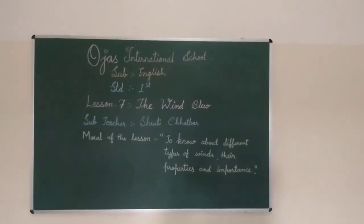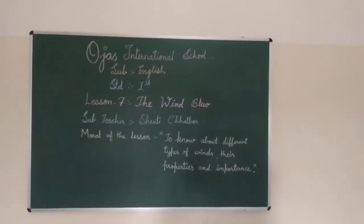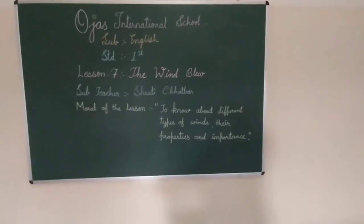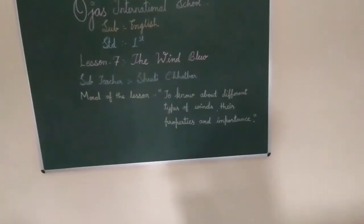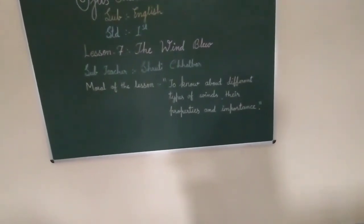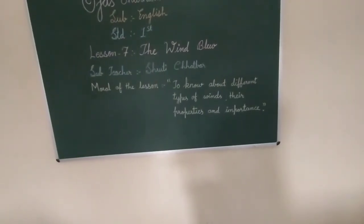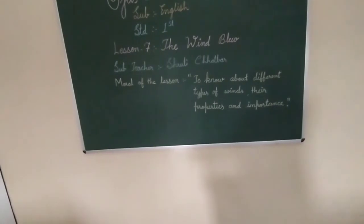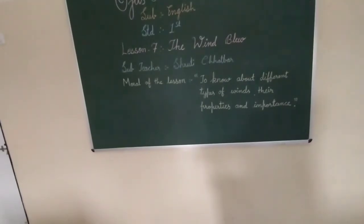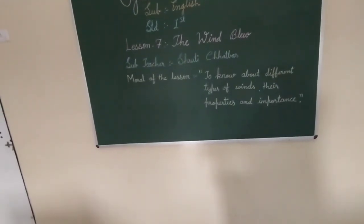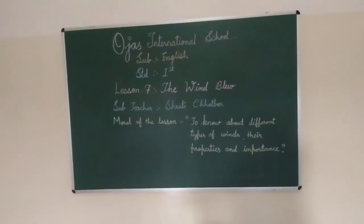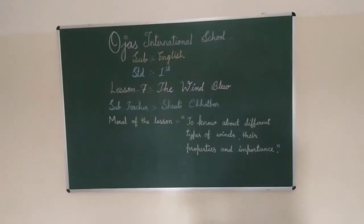Now, children, let's learn some properties and importance of air or wind. We cannot see, touch, or smell air, but we can feel it. Air is invisible. Do you know the meaning of invisible? It means that we cannot see it — that is called invisible. So, air is invisible, but it has one important component: it is oxygen.